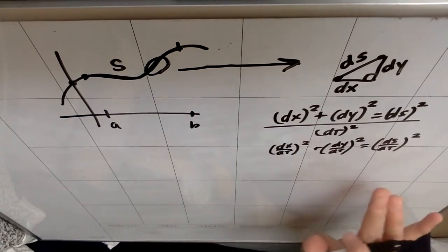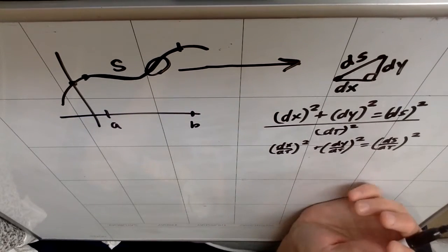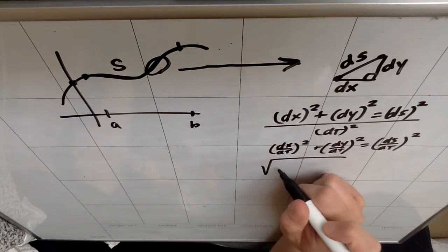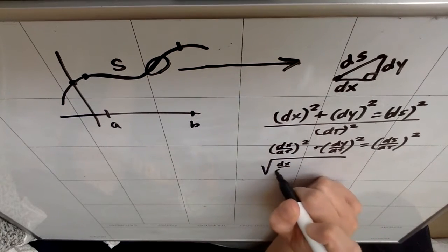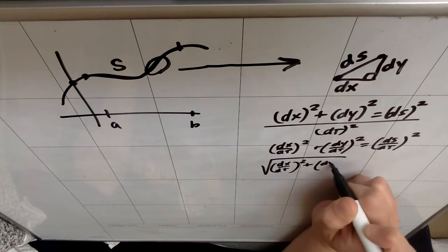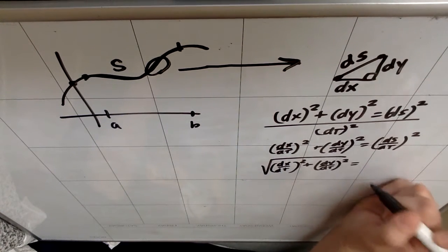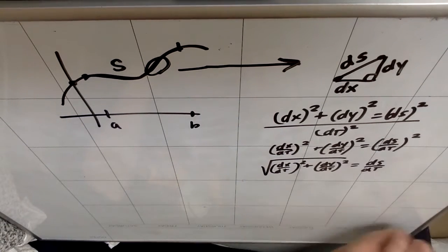If I solve that by taking the square root, arc length is a positive quantity, it is a scalar, so I don't need the plus or minus. I'm going to get the square root of (dx/dt)² plus (dy/dt)² equals ds/dt.